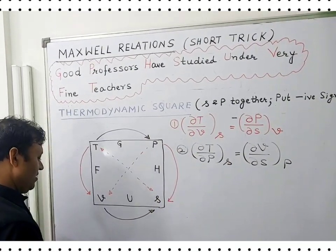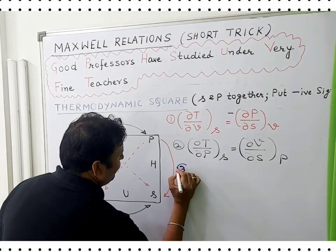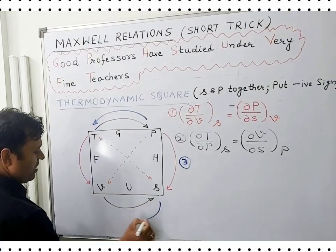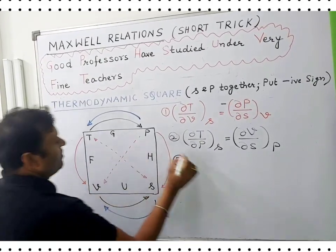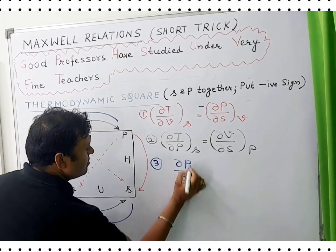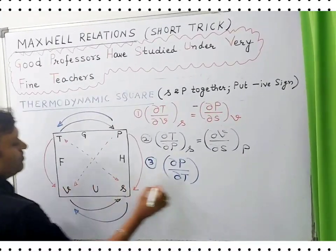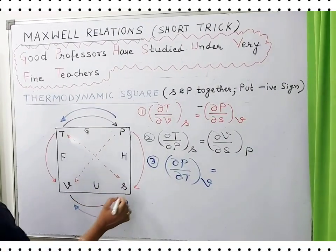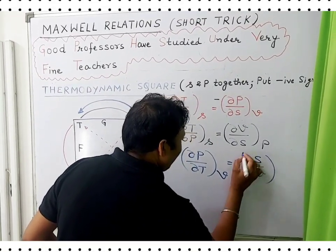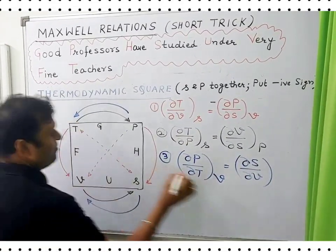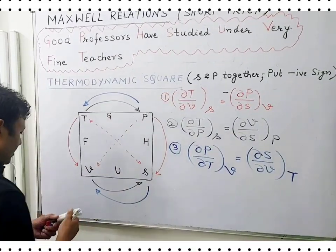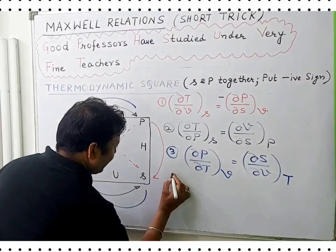The third equation: del P by del T at constant volume is equal to del S by del V at constant temperature — the diagonally opposite parameter.